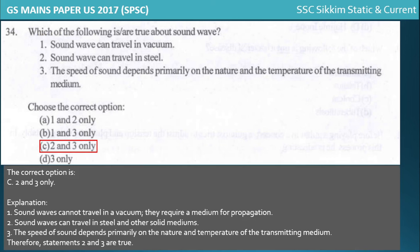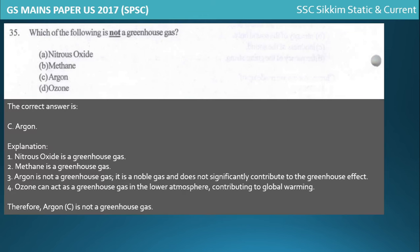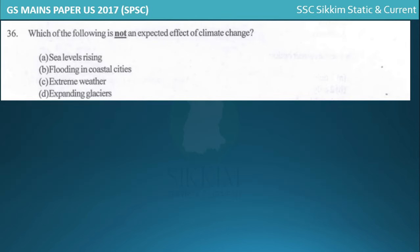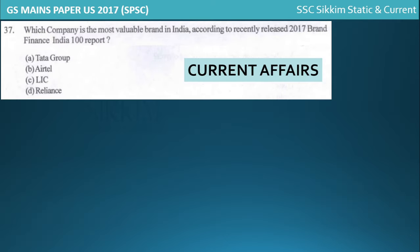Argon is not a greenhouse gas. For climate change effects, expanding glaciers is not an expected effect - rather, retreating glaciers is an effect of climate change. Other expected effects include rising sea levels, flooding in coastal cities, and extreme weather events. These are conceptual-based questions requiring solid understanding.